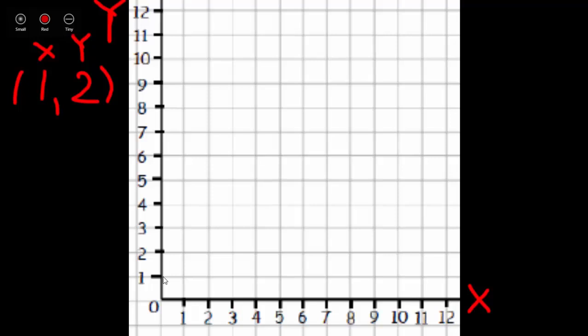Now, sometimes you'll be given an ordered pair and be asked to plot it on a coordinate grid. For example, the ordered pair we have here is 1 and 2. So our first coordinate, like we said, is 1, so I'm going to first find the 1, and since we know that 1 is an x coordinate, we look on the x-axis to find our 1.